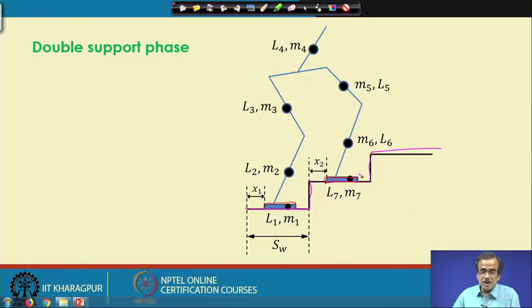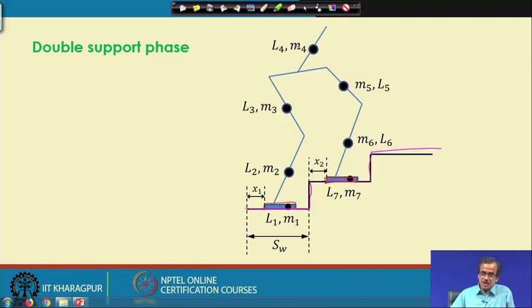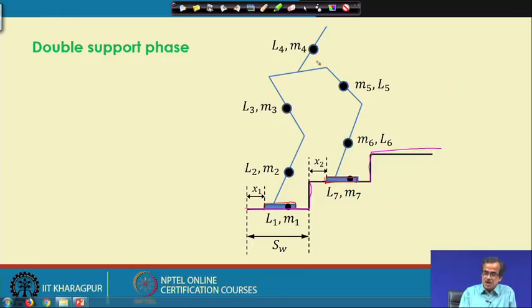To tackle the dynamic support phase, it is a bit difficult. The trunk mass M4 has significant influence on the dynamic balance margin. When the biped robot is working on a plane surface, M4 can be distributed into two equal parts. However, when it is negotiating a staircase, M4 is divided into two parts that are not equal.